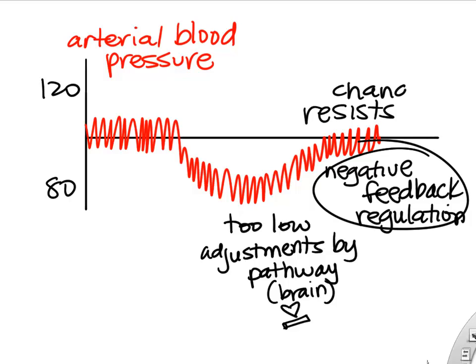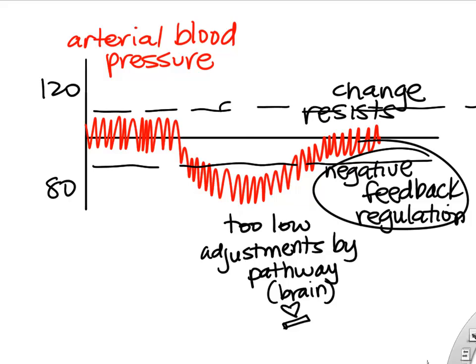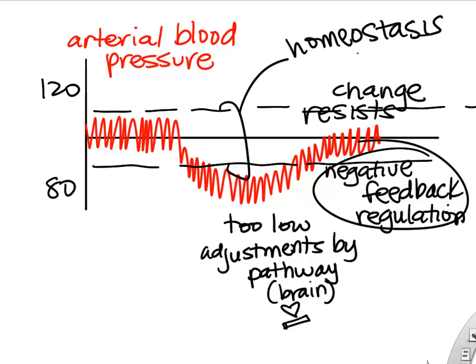Negative feedback refers to our body's regulation of homeostasis — keeping change minimal and resisting change. That's how to remember negative feedback: it keeps blood pressure, body temperature, and oxygen levels in a homeostatic range, maintaining stability.